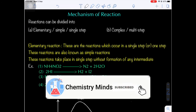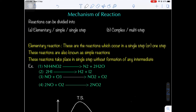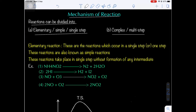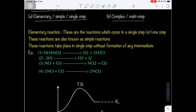In this class we are going to discuss about the mechanism of a reaction — reaction mechanism. According to the reaction mechanism, there are two types of chemical reactions. Number one: elementary reactions, also called simple reactions or single step reactions. Number two: complex reactions or multi-step reactions. Elementary reactions are those in which the reaction occurs in only one step.